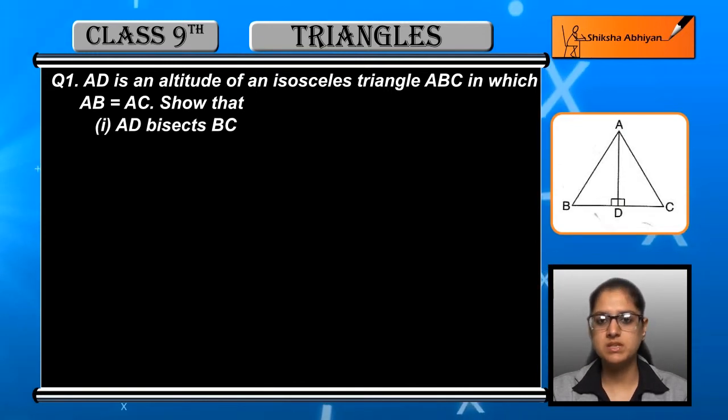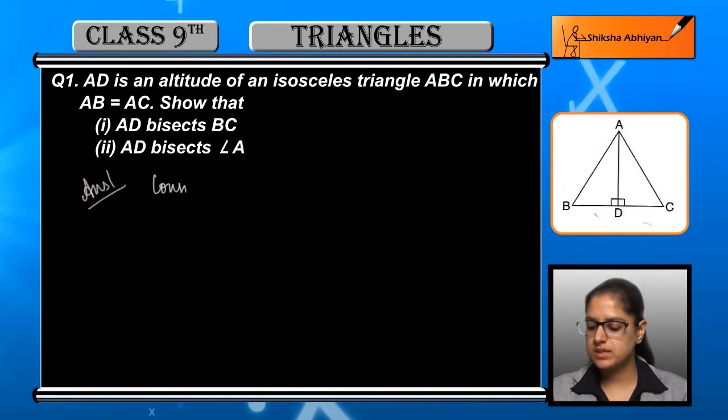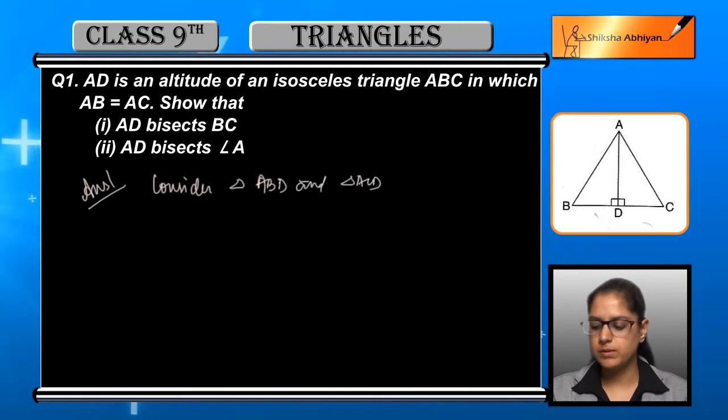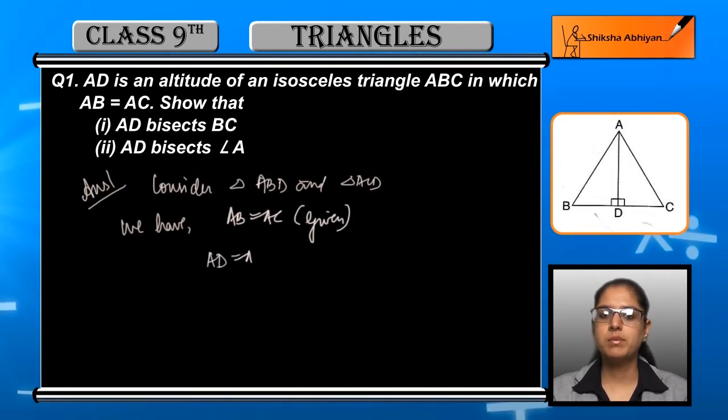You have to prove that AD bisects BC and AD also bisects angle A. Let us see how. First we consider two triangles: triangle ABD and triangle ACD. If you look at the figure very closely, you have AB is equal to AC, it is given to us in the question.